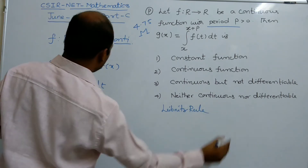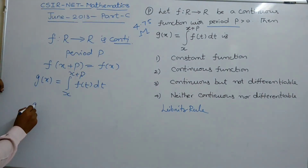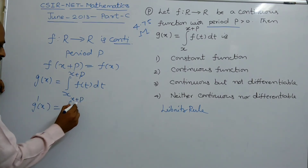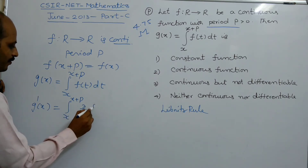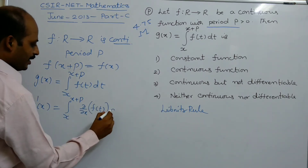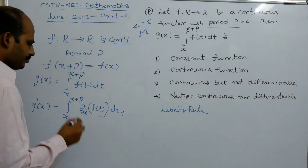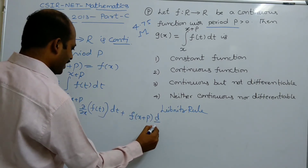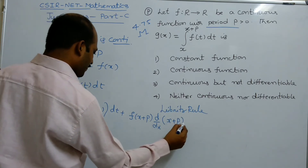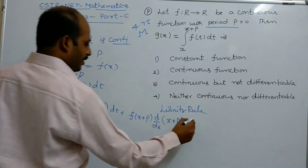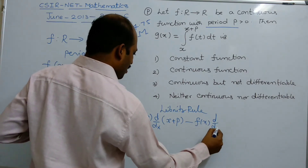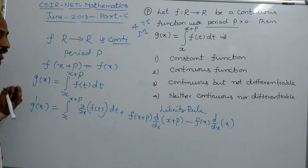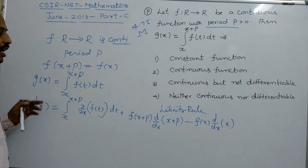By using the Leibniz rule of differentiation under the integral sign: g'(x) equals the integral from x to x+p of ∂/∂x of f(t) dt, plus f(x+p) times d/dx of the upper limit (x+p), minus f(x) times d/dx of the lower limit x. Since f(t) is in the variable t, differentiating with respect to x gives 0.